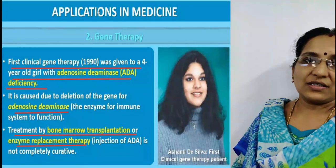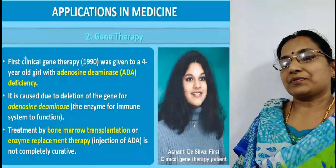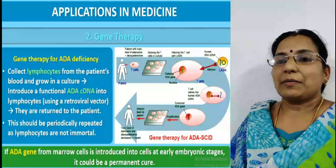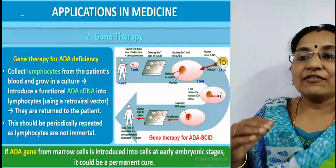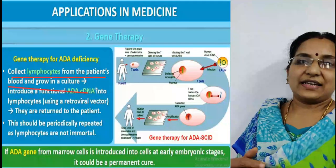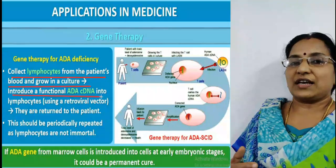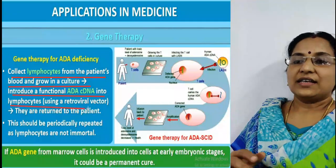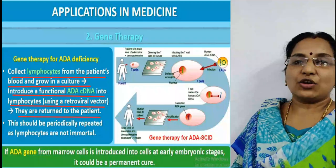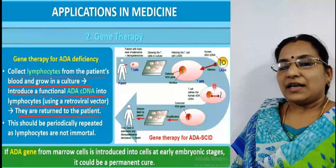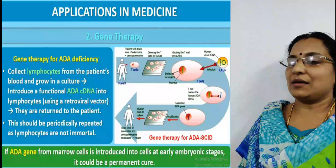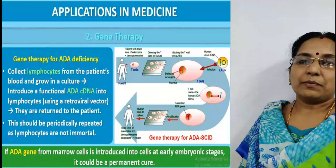Through biotechnology, gene therapy for ADA deficiency was developed. The procedure: collect lymphocytes from the patient's blood and grow them in culture, introduce a functional ADA complementary DNA into lymphocytes using a retroviral vector, then return them to the patient. This must be periodically repeated as lymphocytes are not immortal. If the ADA gene is introduced into bone marrow cells at an early embryonic stage, it could be a permanent cure.